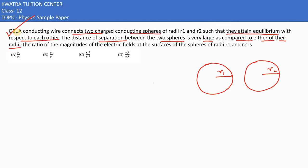The ratio of magnitudes of their electric field at the surface of the spheres of radii R1 and R2 would be what? We can understand that the potential on both sides is the same because they have attained equilibrium.